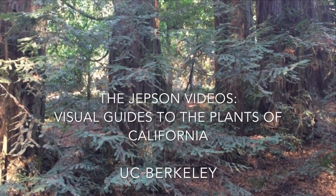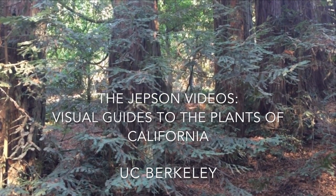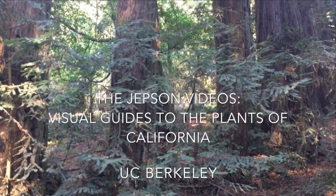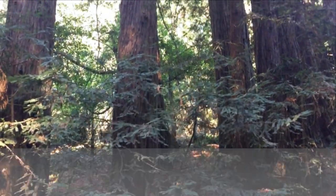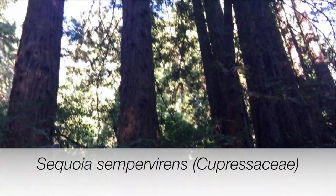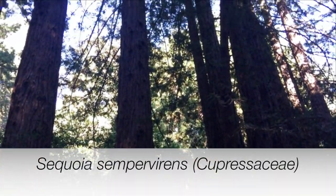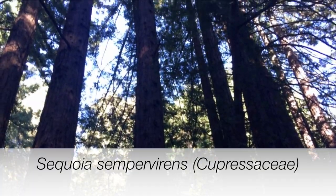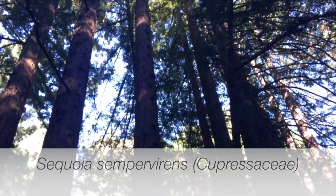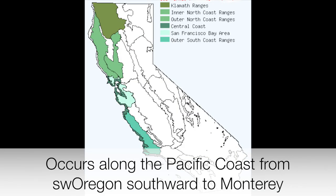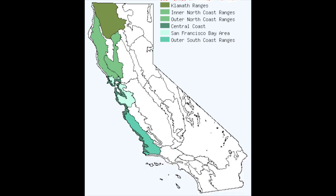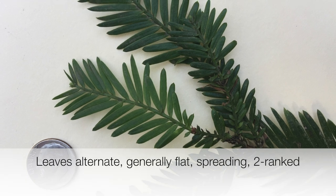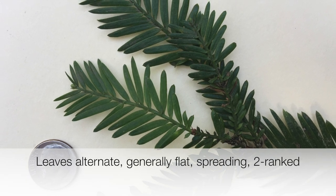Welcome to the Jepson Videos, Visual Guides to the Plants of California. Let's learn how to identify the Coast Redwood, known also by its scientific name, Sequoia sempervirens. Found native along the Pacific Coast from southwestern Oregon to Monterey County, this evergreen tree is recognized by a few key characters.